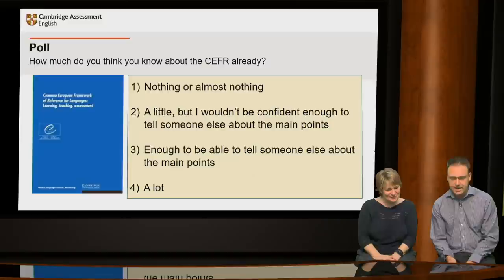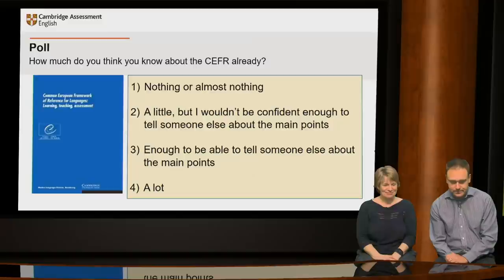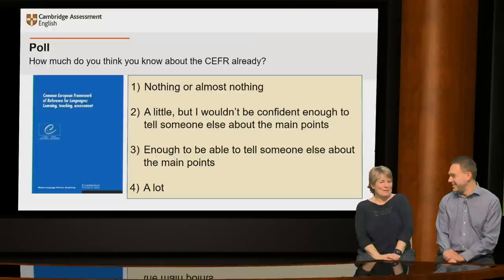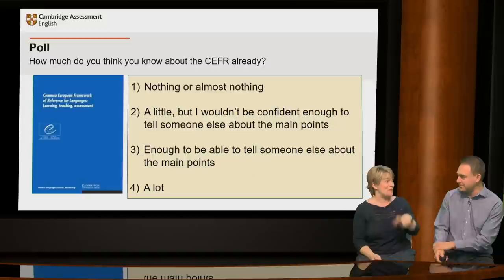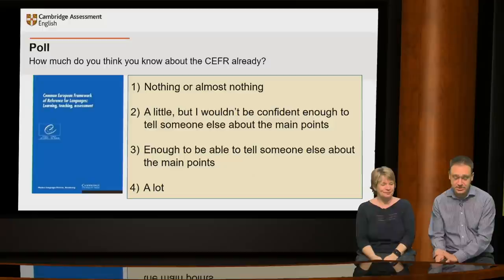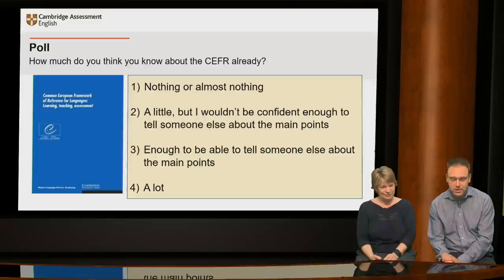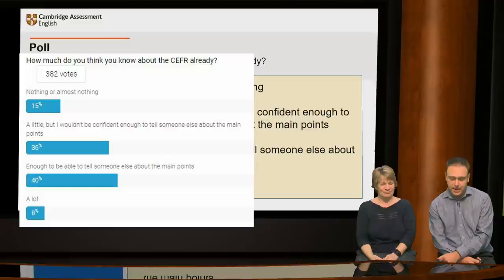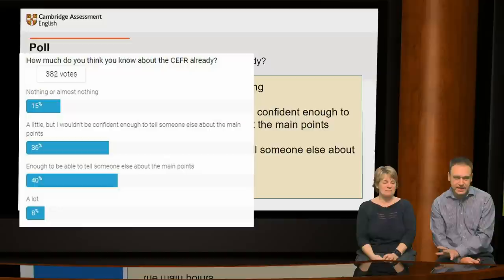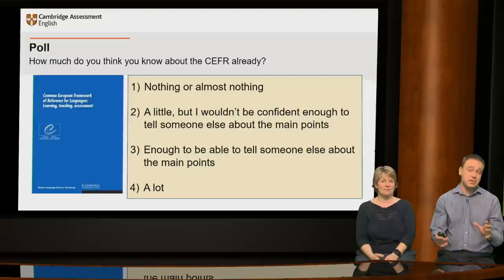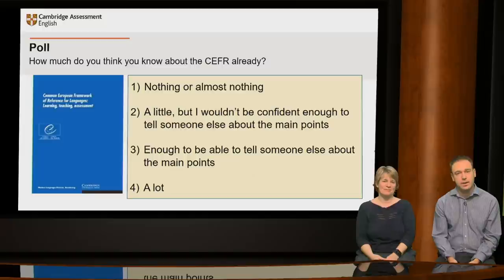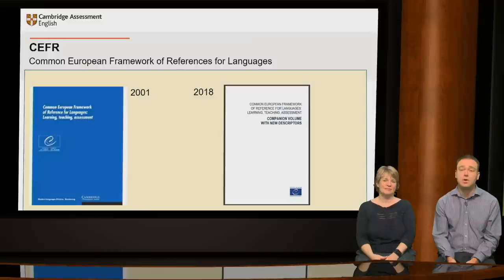The poll results come in. Most participants fall in the two middle categories — about 40% say they know enough to tell someone else about the CFR, and 36% say they know a little. The CFR is the Common European Framework of References for Languages. It's been a project worked on by the Council of Europe in collaboration with organisations such as Cambridge Assessment English over the last 30 years. One of the first landmarks was the publication of the 2001 volume, and then in 2018 a companion volume was released, which expands and develops the 2001 document without replacing it.